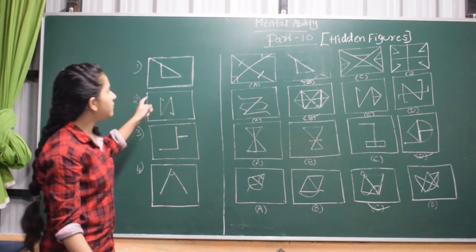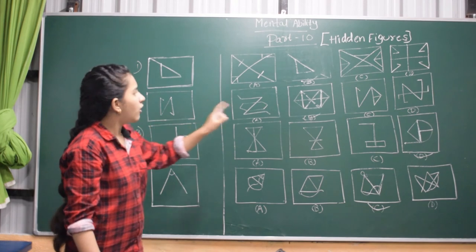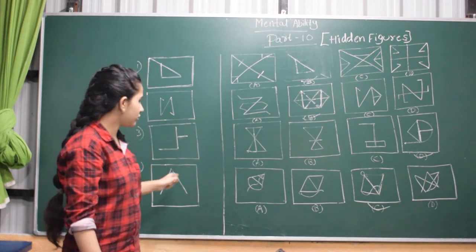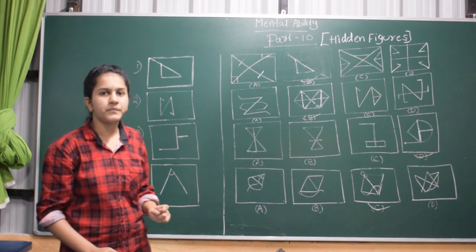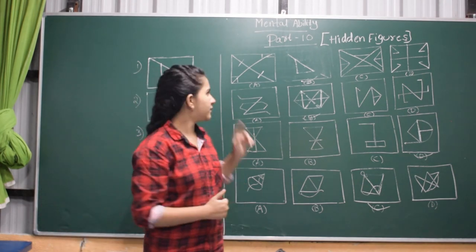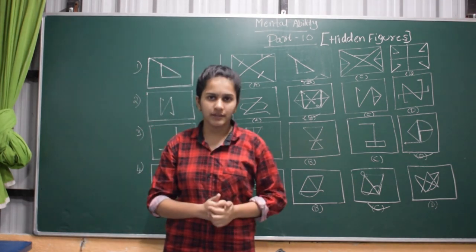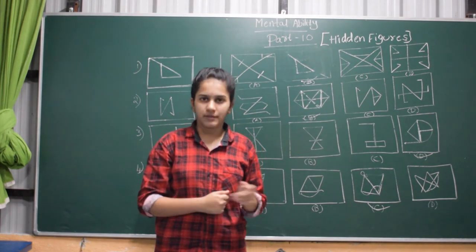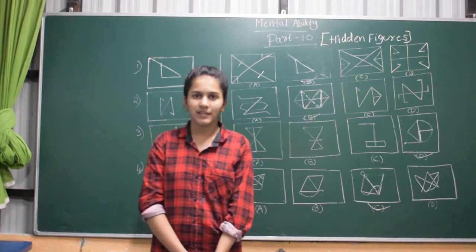So for the first question, B is the answer. For the second one, also B is the answer. For the third one, D is the answer. For the fourth one, C is the answer. I hope you understood these hidden figures. If you like this video, please subscribe to my channel and press the bell icon for notifications. Thank you.